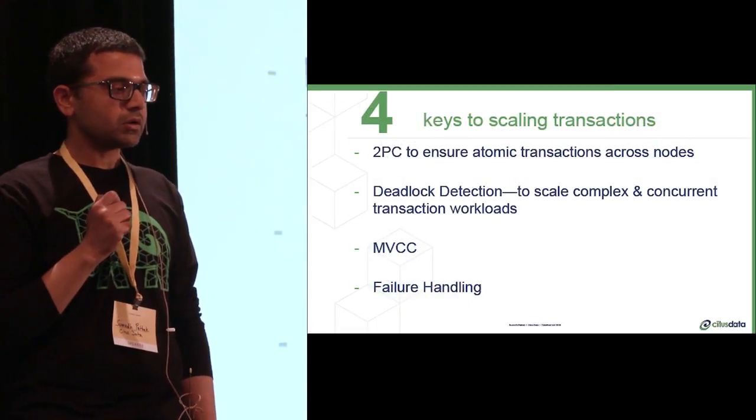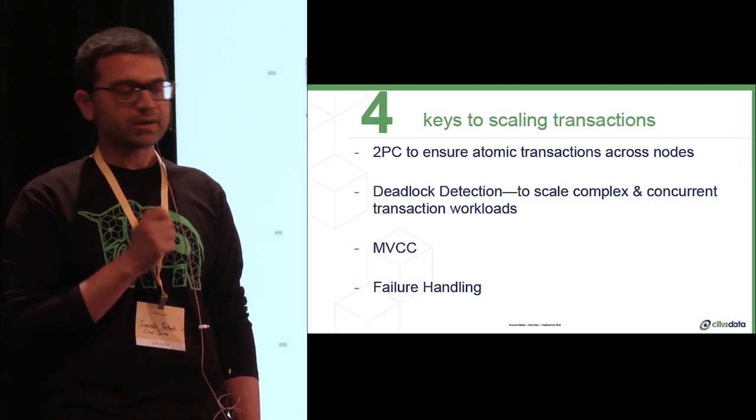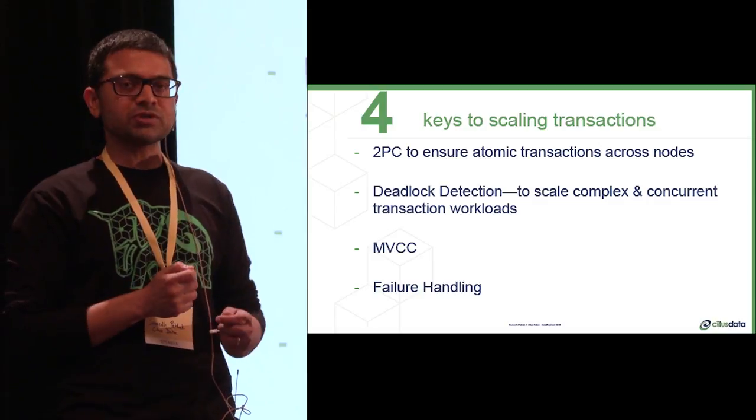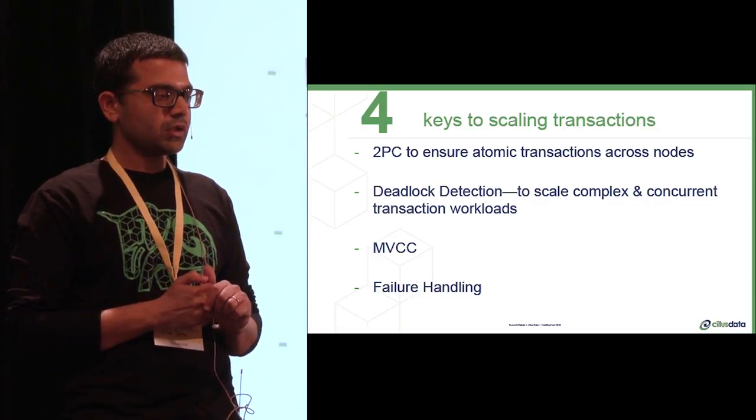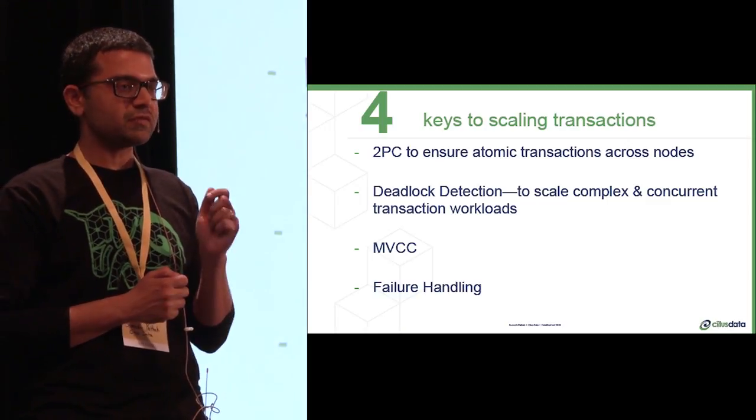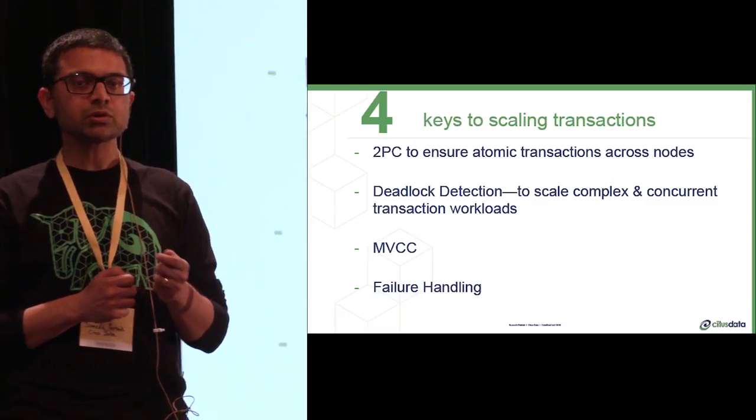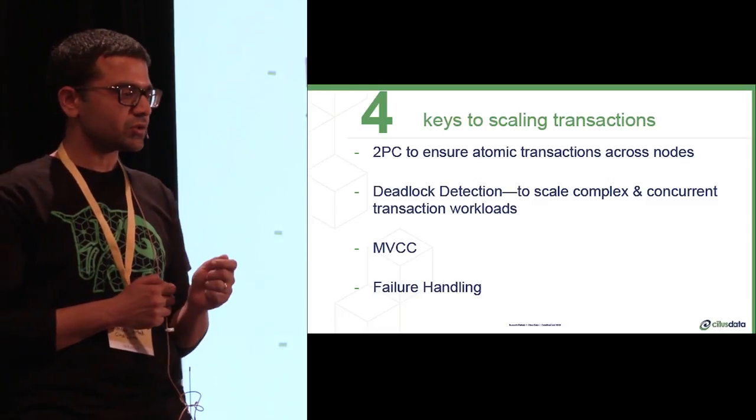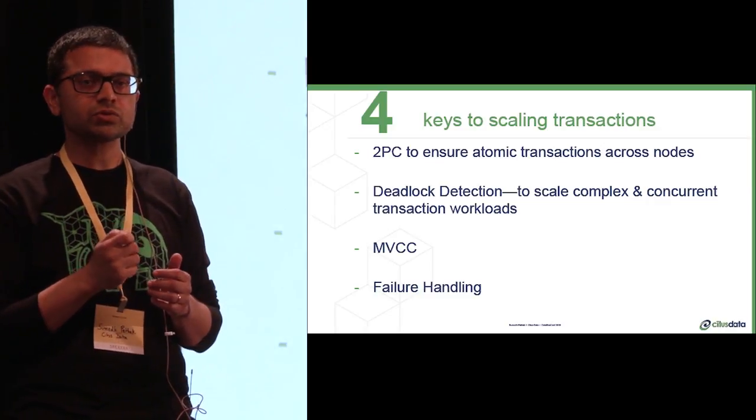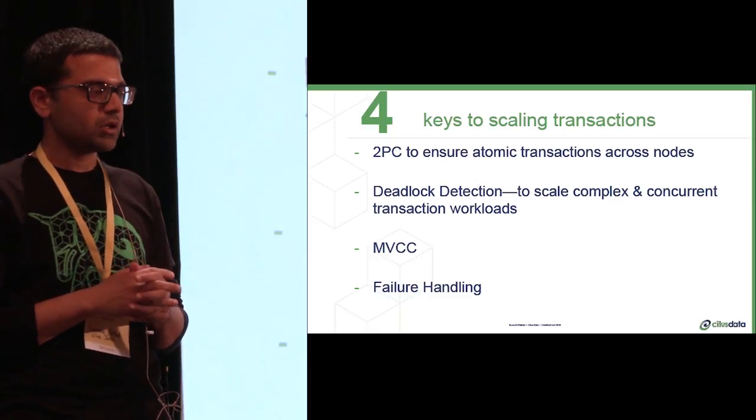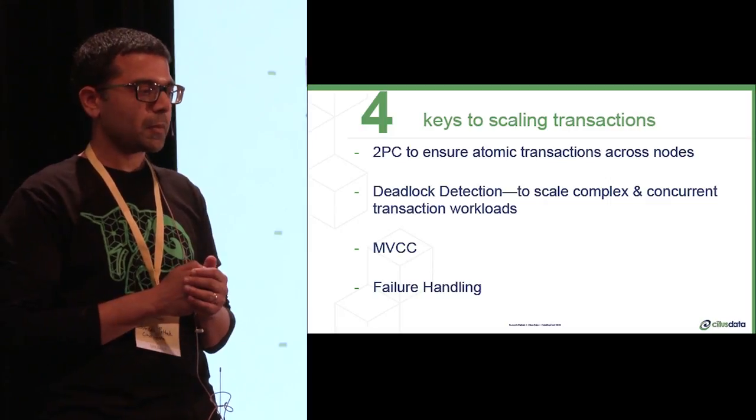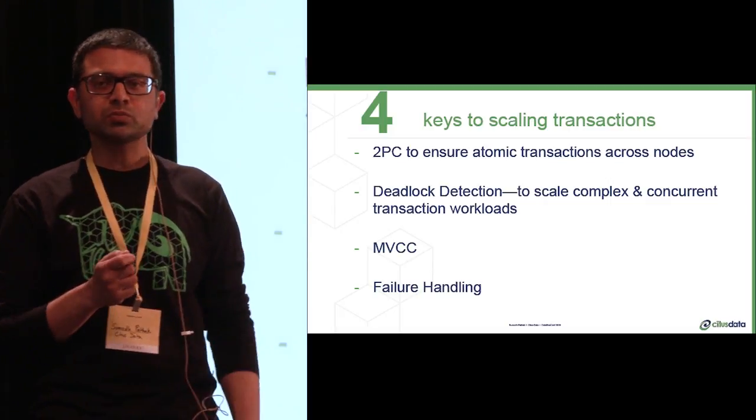So we've seen that scaling transactions needs 2PC and deadlock detection allows us to maintain correctness and scale to multiple sessions running complex transactions. We haven't touched on some of the benefits that a single node relational database gets us. For example, MVCC, which gives us concurrency on the single node as well as isolation. We also haven't touched on failure handling that much, but you can use things like Raft or Paxos to create highly available replica clusters. But relational databases come with a rich set of replication and HA capabilities, allowing you to configure replication across various nodes in various topologies.